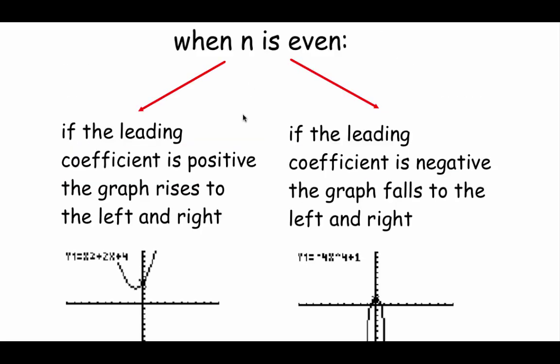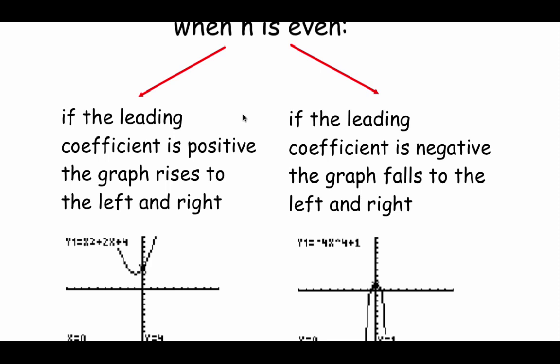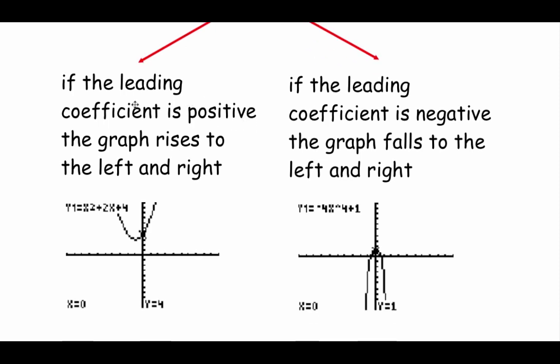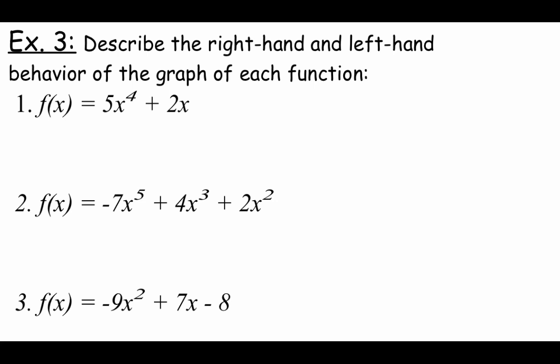For n being an even power, the leading coefficient test again tells us what's happening on the left and right. If the leading coefficient is positive, the graph rises both as we move to the left and the right — that parabolic shape. If the leading coefficient is negative, that's an x-axis reflection, so the graph falls as it goes to the left and to the right. We also need to make sure our functions are written in descending power order, from highest to lowest, so we can identify the leading coefficient on the highest-powered x.